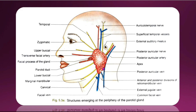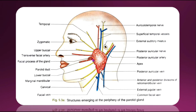Looking at the relations of the surfaces: the superior surface, which forms the upper end of the gland, is small and concave. It is related to the cartilaginous part of the external acoustic meatus, the posterior surface of the temporomandibular joint, the superficial temporal vessels, and the auriculotemporal nerve. The superficial surface is the largest of the four surfaces, covered with skin, superficial fascia, parotid fascia, and parotid lymph nodes.